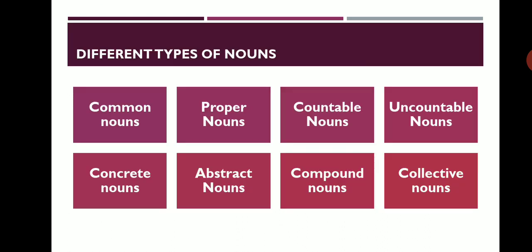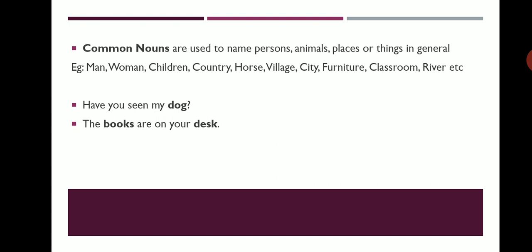Different types of nouns — these are the different kinds of nouns we have in our language: common nouns, proper nouns, countable nouns, uncountable nouns, concrete nouns, abstract nouns, compound and collective nouns. Let us discuss the first type — common nouns.